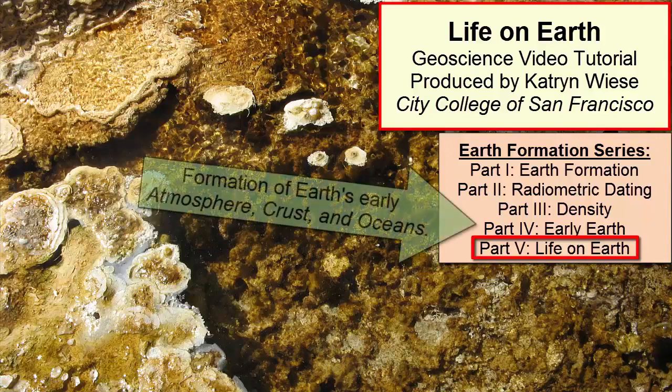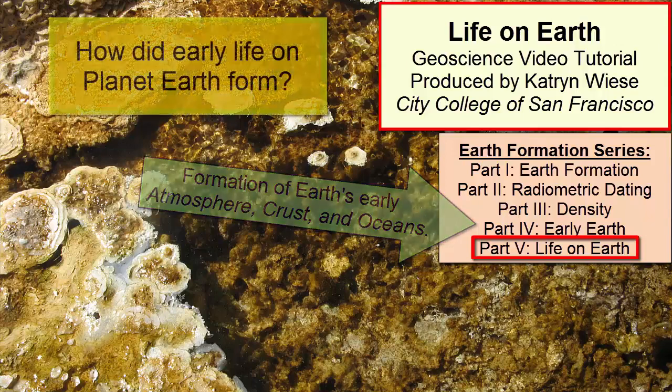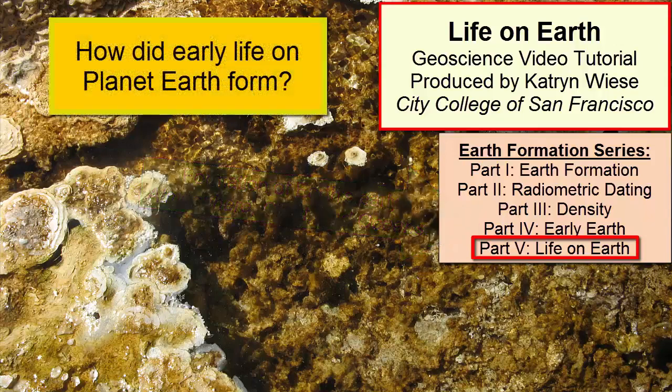After having watched the Early Earth video tutorial, we now have an understanding of how Earth's early atmosphere, crust, and oceans formed. But how about life? When did that evolve, and what was early Earth's life like?